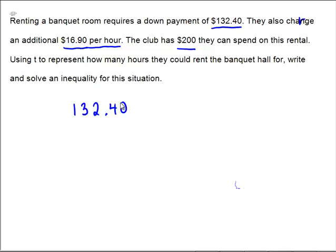Then it says that they charge additional money. So in addition to that $132.40, I'm going to have to add in some extra money. How much extra? Well, it looks like it's $16.90, but per hour. So every additional hour costs $16.90. One would be one copy of $16.90, two would be two copies, and so forth. So how many hours do we actually rent the banquet hall for? Apparently T. So I'm going to multiply the $16.90 by T, so that way I can get the total amount of money that I'm paying for the hourly fee, depending on how many hours I spend.